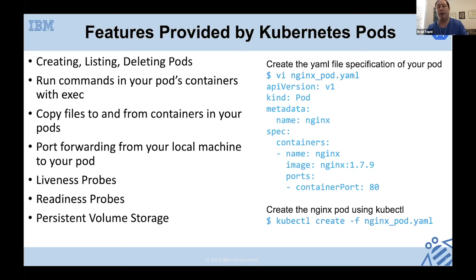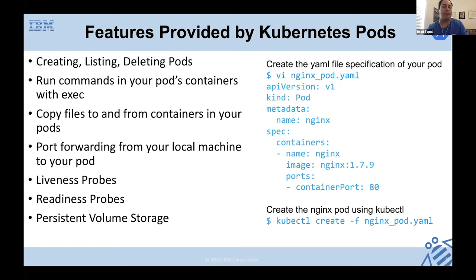One key feature of Kubernetes is it has out-of-the-box scaling built in, and it also keeps track of your pod applications to see if they're still up and running. If you want 10 copies of your pod running and a couple crash, Kubernetes can recognize that and start new ones. Liveness probes and readiness probes enable Kubernetes to keep track of your pods and make sure they're up and running or start new ones if needed.